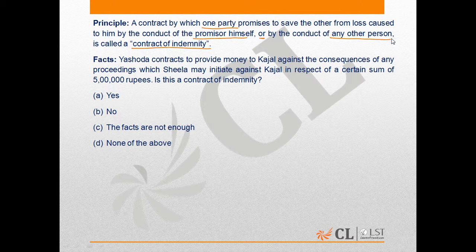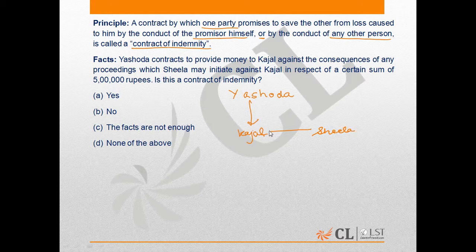The facts state that Yashoda contracts to provide money to Kajal against the consequences of any proceedings which Shira may initiate against her in respect of a certain sum of 5 lakh rupees. Going by the principle, Yashoda is the party promising to save the other, which is Kajal, from the conduct of any other person, which is Shira, in respect of a certain sum. As per the principle, we can directly say that this is a contract of indemnity.